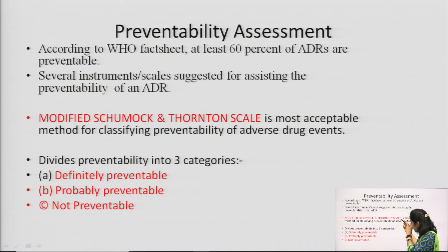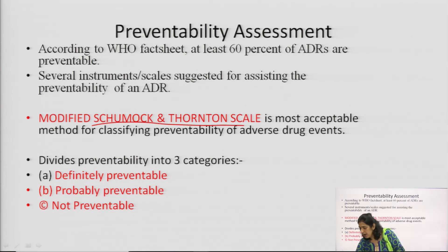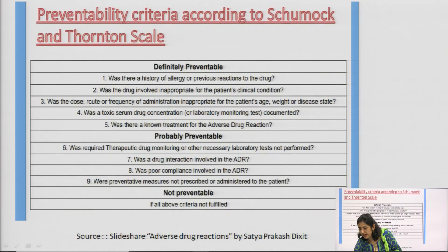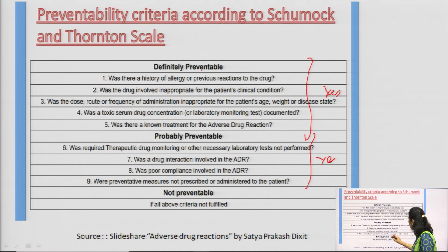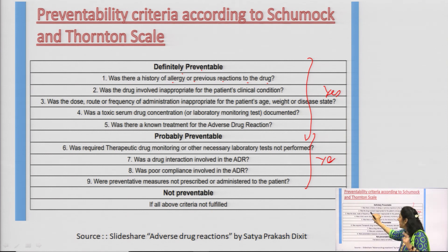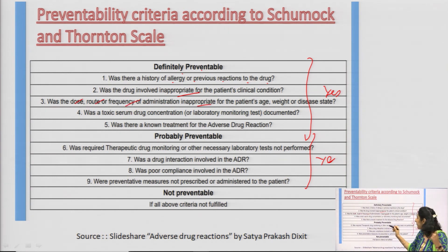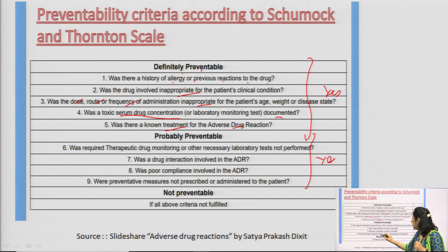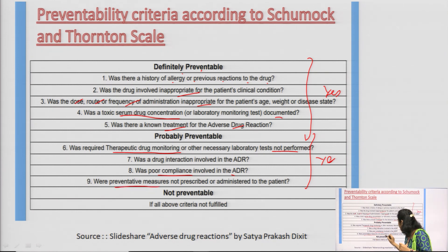For preventability assessment, we use the modified Schumock-Thornton scale. Definitely preventable: if there was a history of allergy or previous reaction to the drug; if the drug involved was inappropriate; if dose, route, or frequency was inappropriate; if toxic serum concentration was documented; or if a known interaction caused the ADR. Probably preventable: if therapeutic drug monitoring was not performed; if poor compliance was involved; or if preventive measures were not prescribed. Otherwise, the ADR is not preventable.